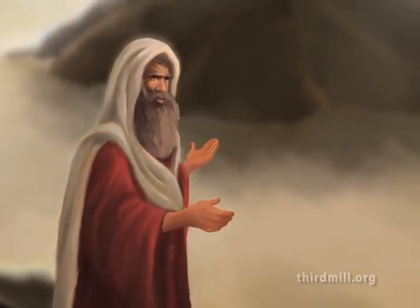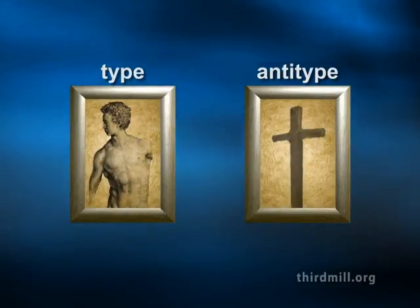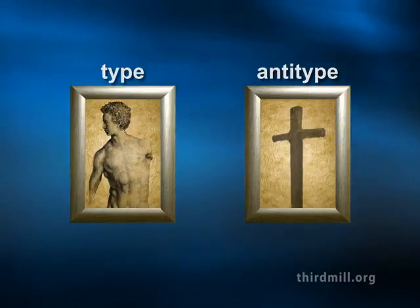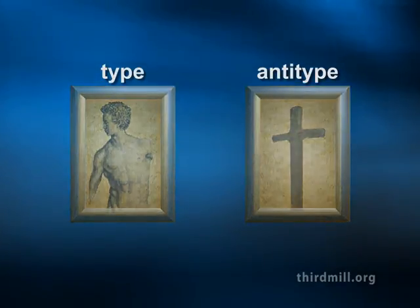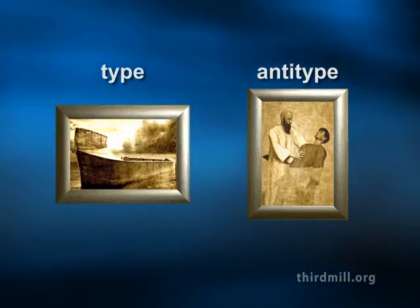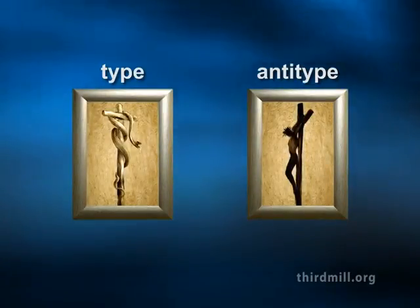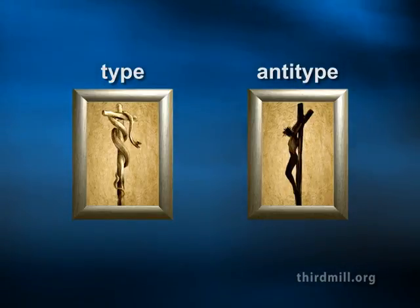Instead of being distracted by such insignificant comparisons, well-founded typologies consist of comparisons of significant theological structures associated with their elements. The elements of typologies do not stand alone in their typologies. They serve as synecdoches — parts that stand for larger, closely associated theological ideas. When biblical writers mentioned particular persons, institutions, or events as elements of typologies, they had in mind the larger theological structures that those elements represented.